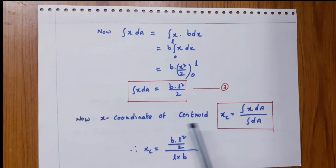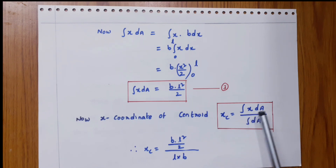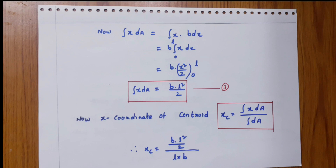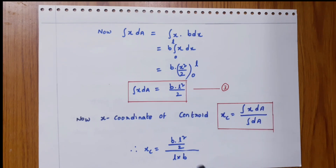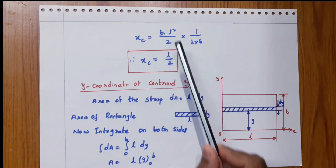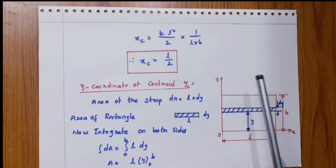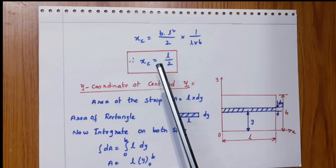Now, the x-coordinate of the centroid. The formula is xc equals integral x dA divided by integral dA. We already calculated integral x dA equals B L squared by 2, and integral dA equals L into B. So, xc equals B L squared by 2 divided by L into B, which simplifies to xc equal to L by 2.